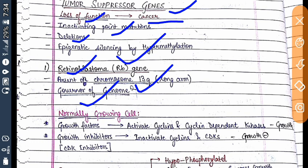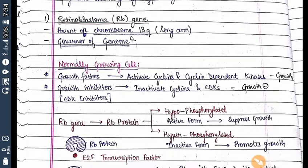In a normally growing cell, growth factors come in and activate cyclins and cyclin-dependent kinases, leading to cell growth. Growth inhibitors, which are CDK inhibitors, come in and inactivate cyclins and CDKs, stopping growth. This is a normal phenomenon.